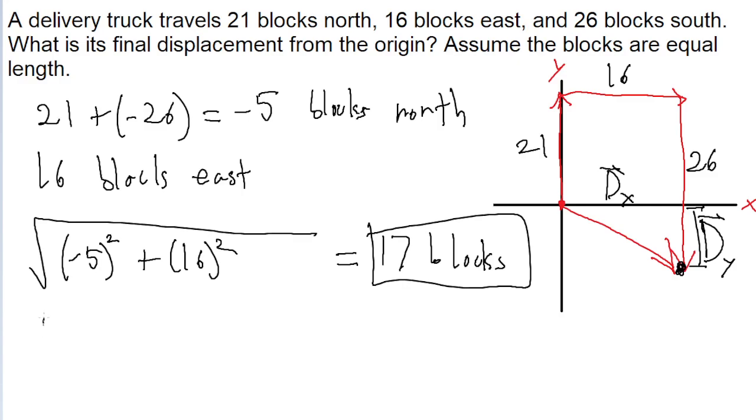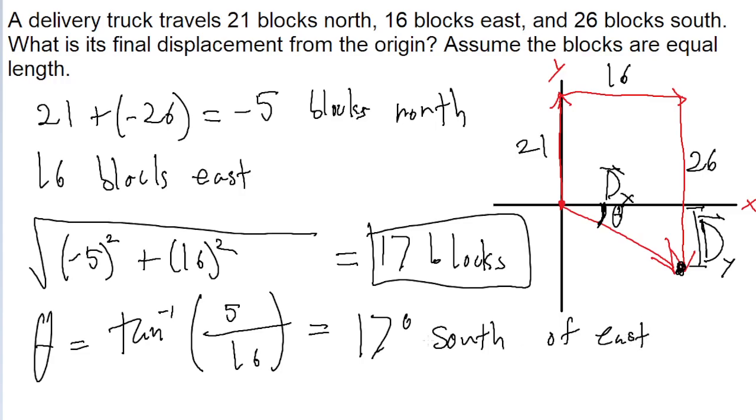We also want to find the angle of the displacement, and the formula for that is the inverse tangent of the y-component divided by the x-component, 5 divided by 16, which gives us an answer of 17 degrees. And we can see from the diagram that this is this angle right here, which is an angle south of the positive x-axis. So that's 17 degrees south of east. So that is how we represent the direction.